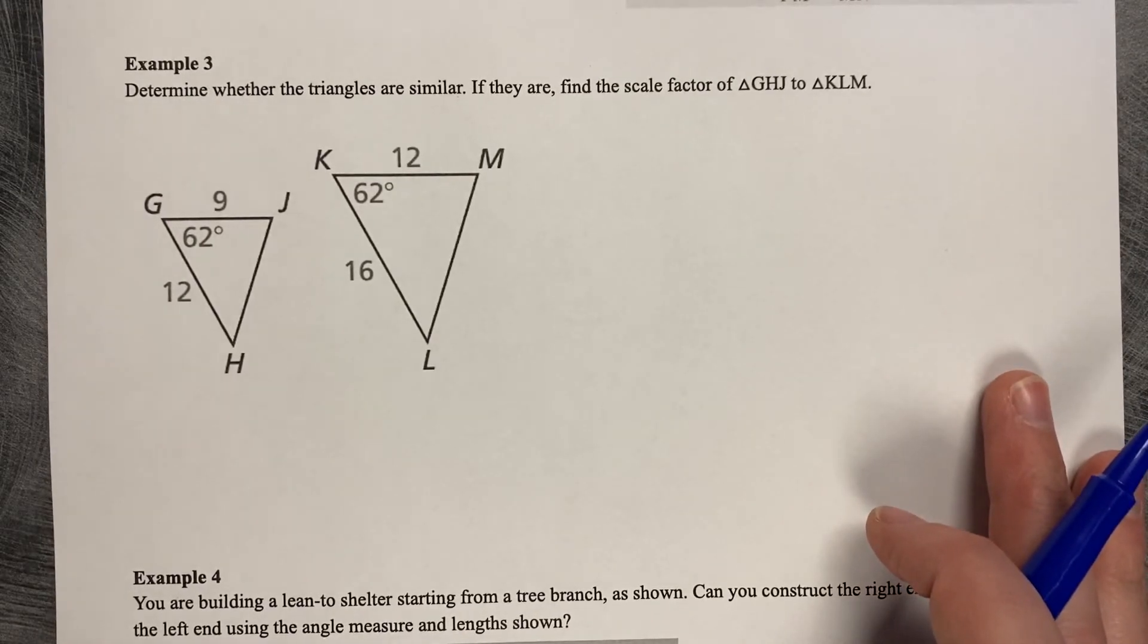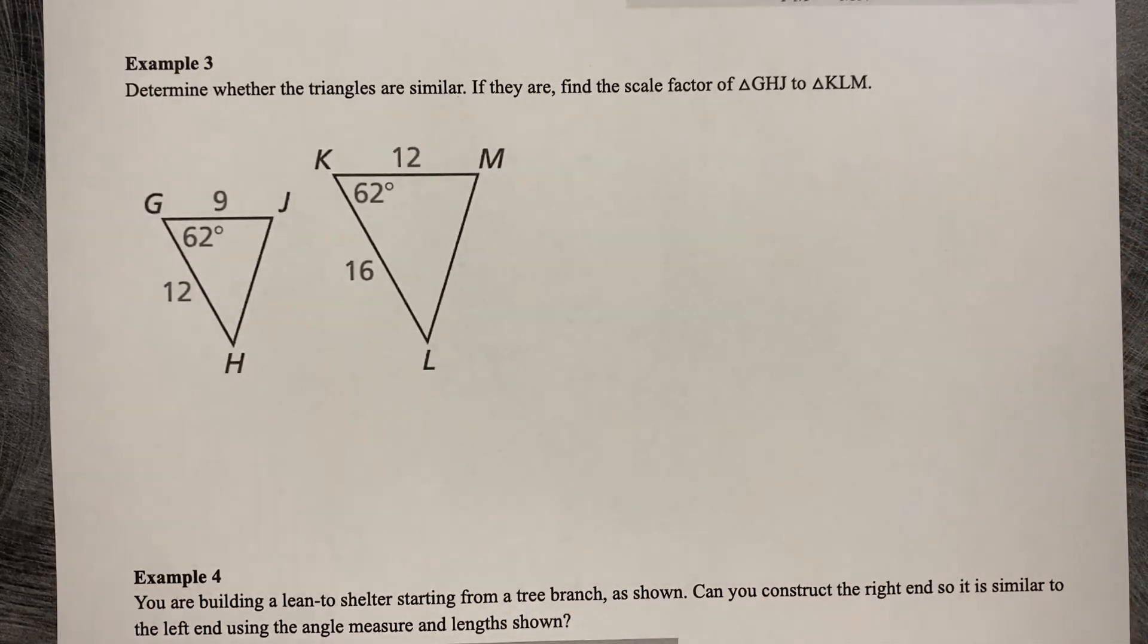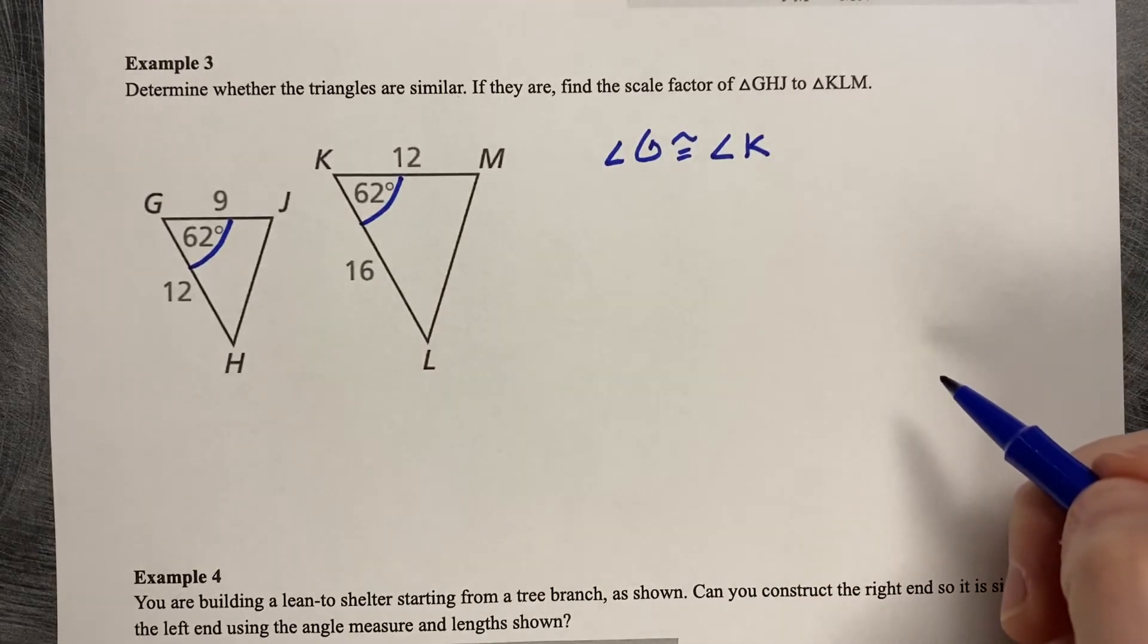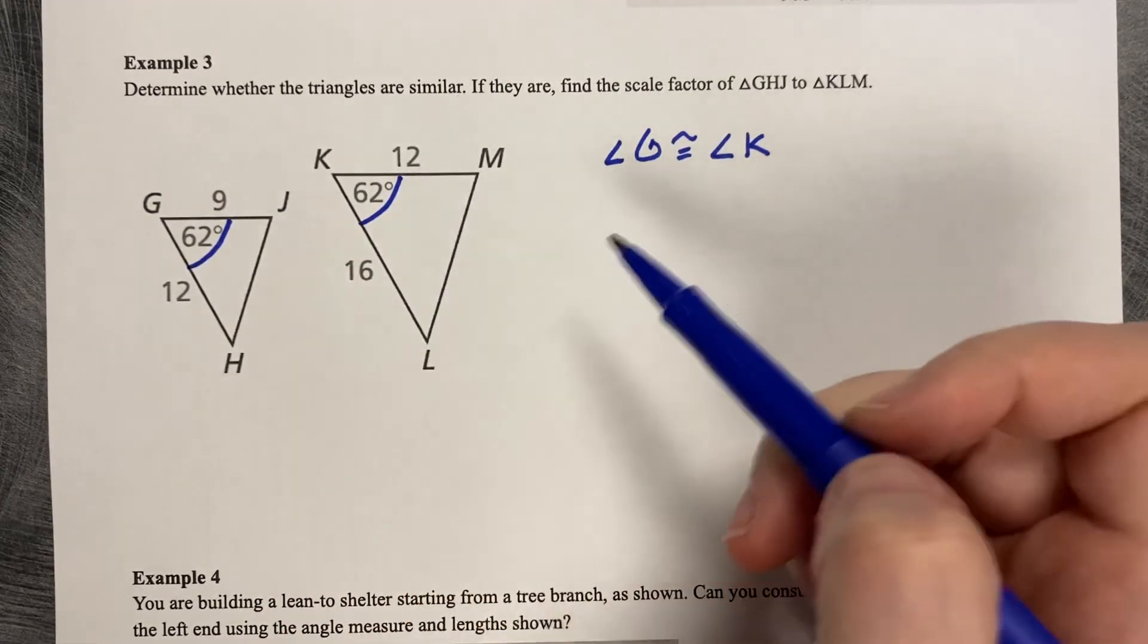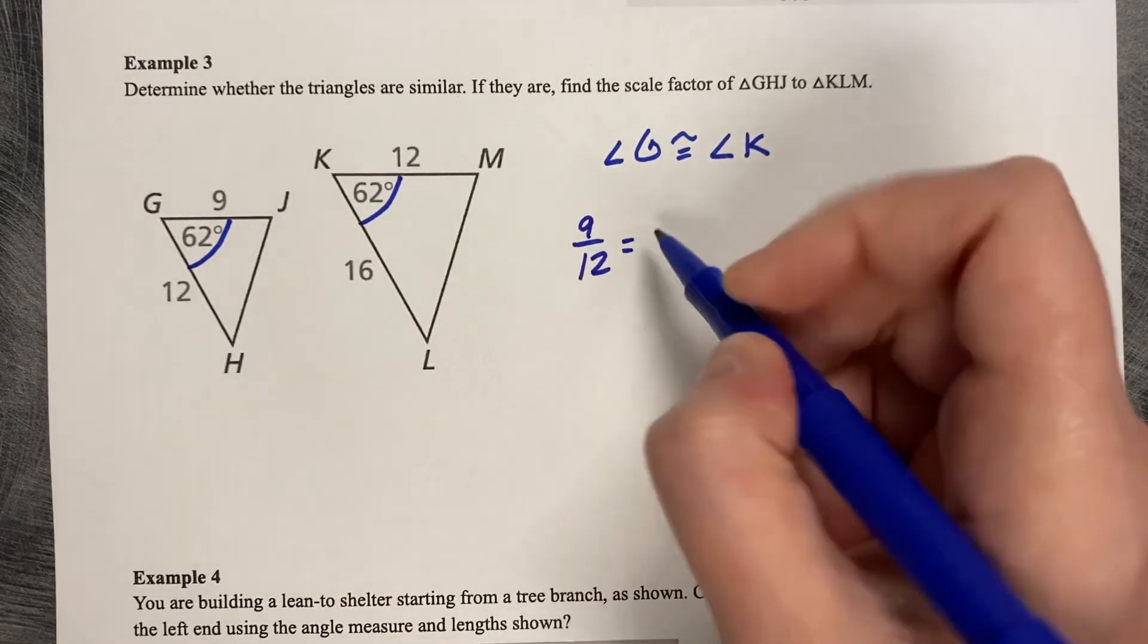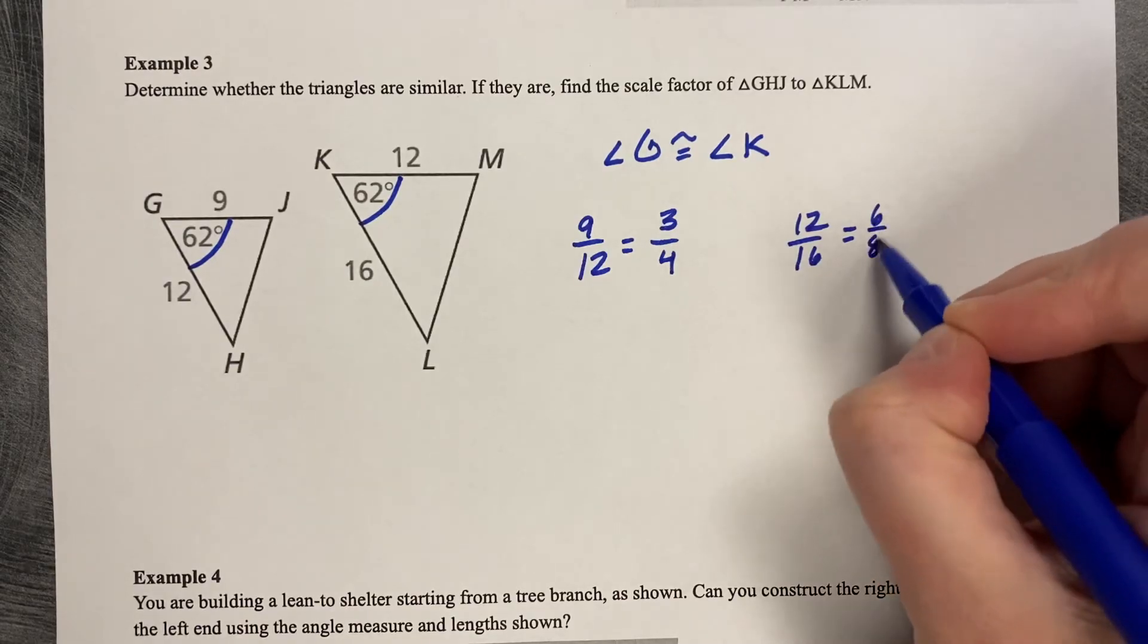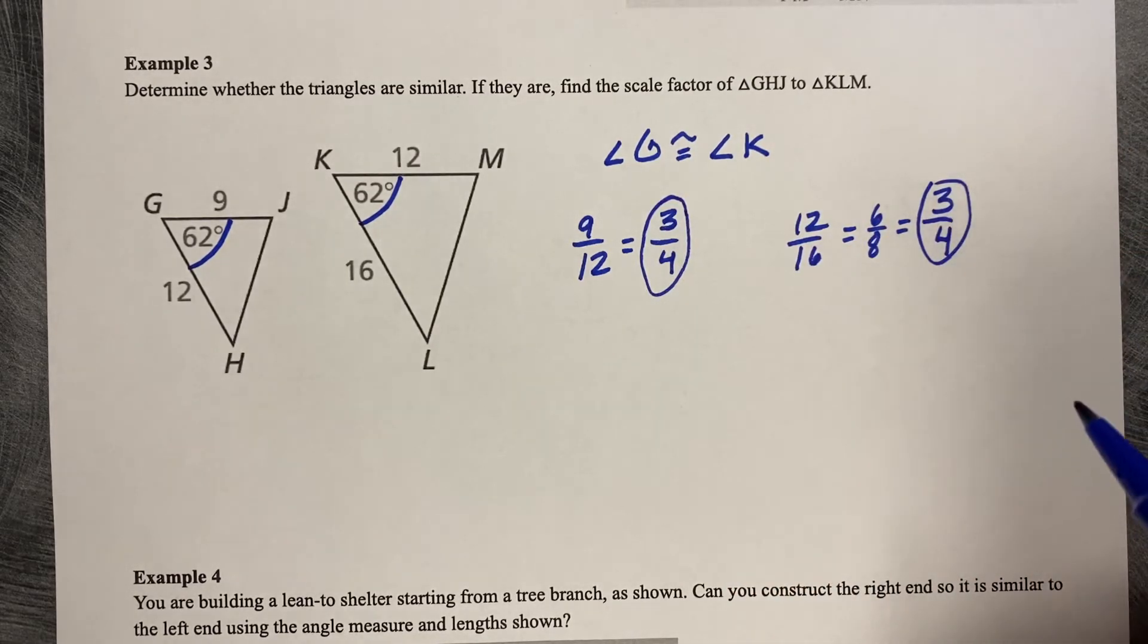Let's take a look at an example. Determine whether the triangles are similar. If they are, find the scale factor from GHJ to KLM. So the first thing I notice is that angle G is congruent to angle K. So there's my angle part of the SAS part. So now I just need to know if the side lengths that are included are proportional. So let's compare 9 to 12, which is 3 fourths, and then 12 to 16, 6 eighths, or 3 fourths. Yay! So those side lengths are proportional.